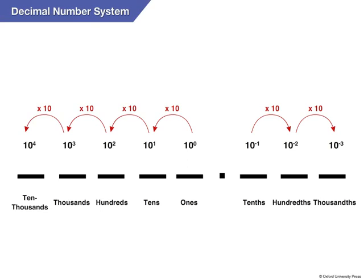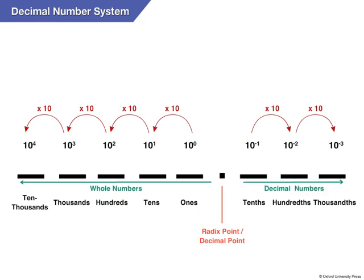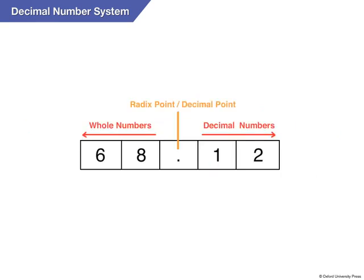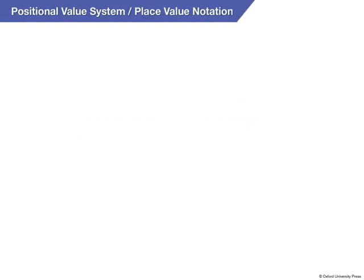The decimal system is also called the positional value system or the place value notation. The radix point, more commonly known as the decimal point, separates the whole numbers on the left from the decimal numbers on the right. The positions to the right of the decimal point are called the decimal places. For example, look at the decimal number 68.12.